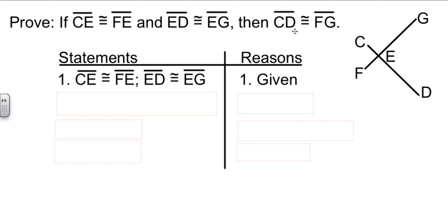Now, we know where we're trying to get to is CD is congruent to FG. Well, if we want to talk about segment CD, we can say that CD is equal to CE plus ED. Right? The two smaller parts added together make the whole big one.